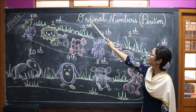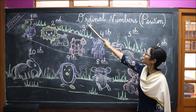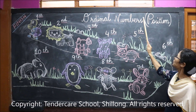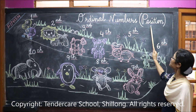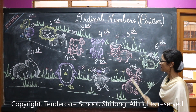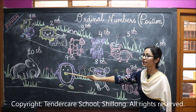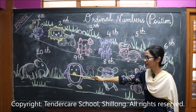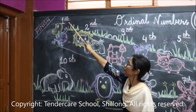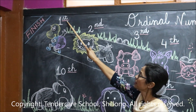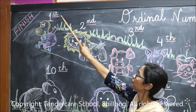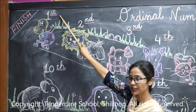Okay, children, as you have already learned about ordinal numbers, now we will see the position of these animals running in the race. Which animal is in the first position? The turtle is in the first position.